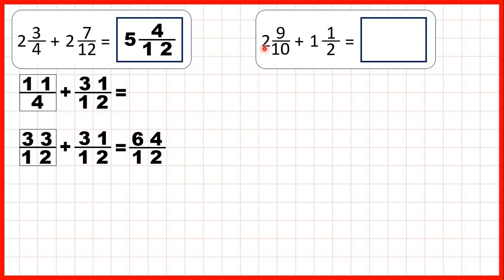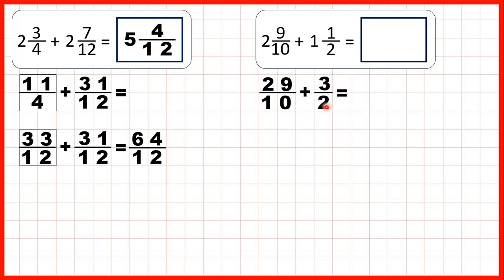Now we have 2 and 9 tenths plus 1 and a half. So first, 2 and 9 tenths as an improper fraction is 29 tenths. That's because 2 times 10 is 20, plus 9 is 29, and the denominator stays the same. Now 1 and a half is 3 over 2, or 3 halves as an improper fraction, because 1 times 2 is 2, plus 1 is 3.